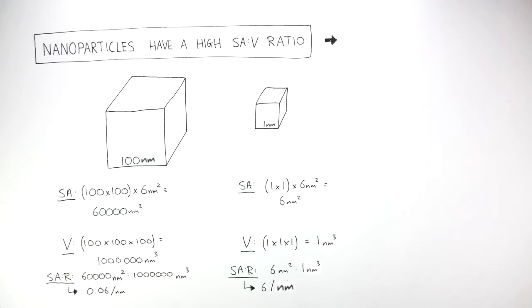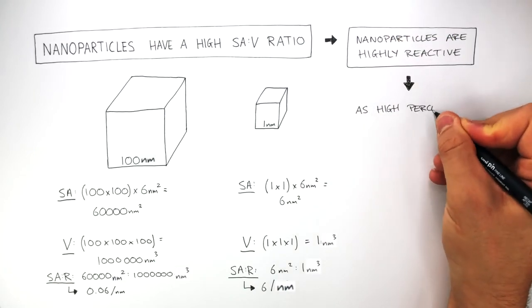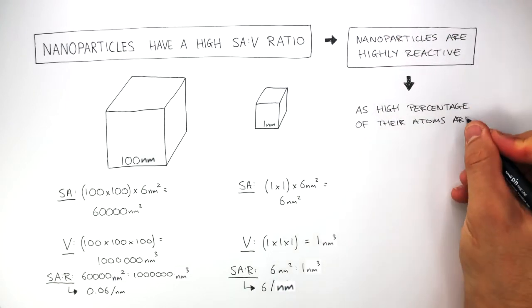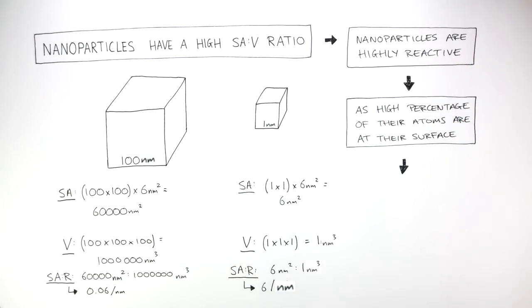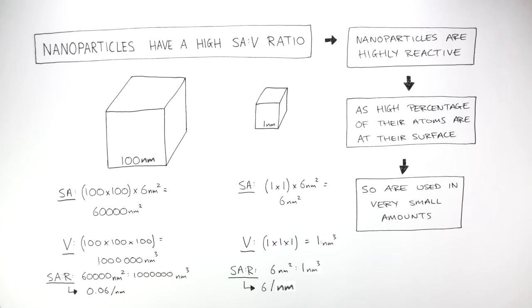The high surface area to volume ratio means nanoparticles are highly reactive as a high percentage of their atoms are at their surface, so they are used in very small amounts due to their very high surface area to volume ratio.